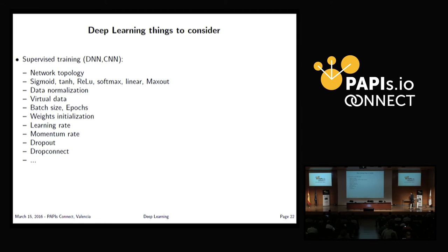When training a deep neural network, there are many things to consider: network topology (convolutional or plain MLP), number of hidden layers, neurons per layer, activation function (sigmoid, ReLU, maxout), data normalization, use of virtual/augmented data, batch size, number of epochs, weight initialization, learning rate, momentum rate, dropout, and dropconnect values. There are a lot of parameters — not only the network weights, but also architectural choices like whether a convolutional layer is 1×1 or 3×3. You need hardware to try different models, topologies, and learning rates.